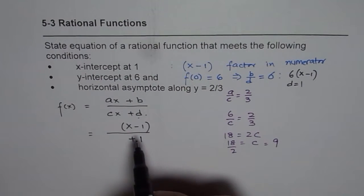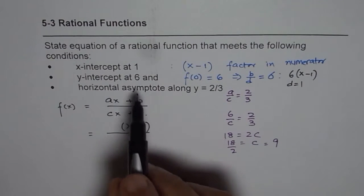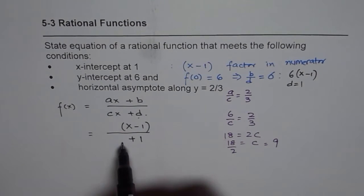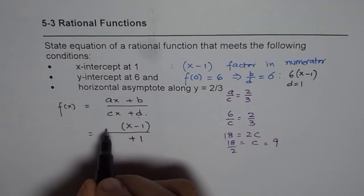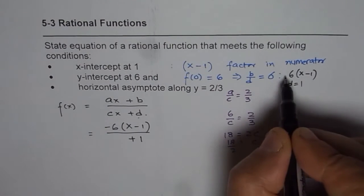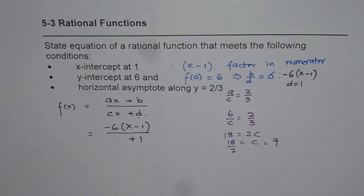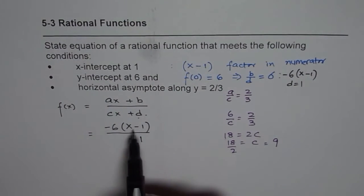Now, if I write d as 1 and I need a value of 6 when x is 0, I should have minus 6 here. Or I could make minus 1 in the denominator.